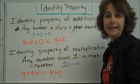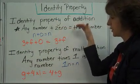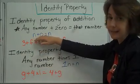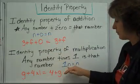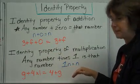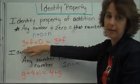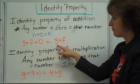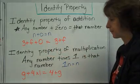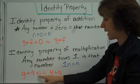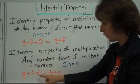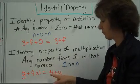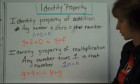The identity property of addition and multiplication. The identity is something that doesn't change — I can add 0 to n and it stays n, or I can multiply n by 1 and it stays n. Here's what it looks like simplifying an expression: 3 plus f plus 0 is the same as 3 plus f. And g plus 4 times 1 — well 4 times 1 is 4, so this is the same as g plus 4. This also used the commutative property because I changed the order of the addends.